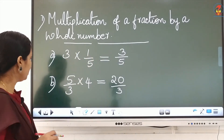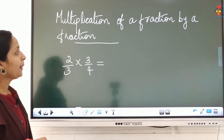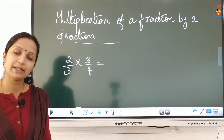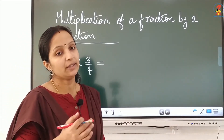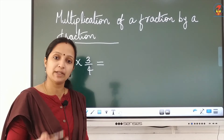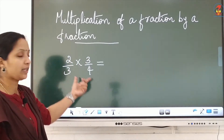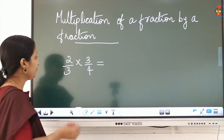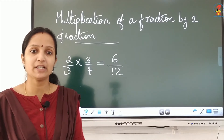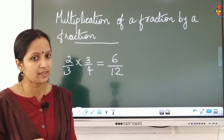Now the next topic: multiplication of a fraction by a fraction. If you want to multiply two fractions, multiply the numerators and multiply the denominators. That means we find the product of the numerators and the product of the denominators. For example, 2 into 3 equals 6, and 3 into 4 equals 12.